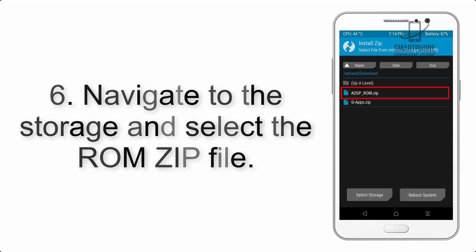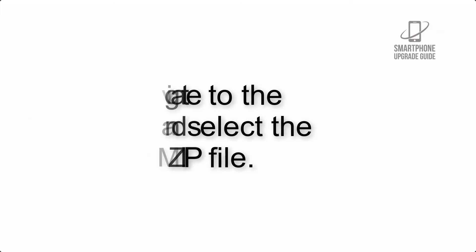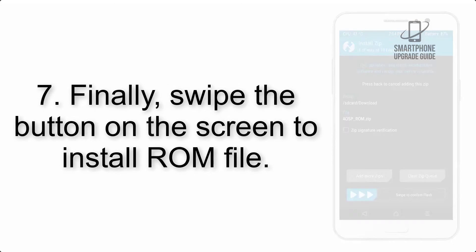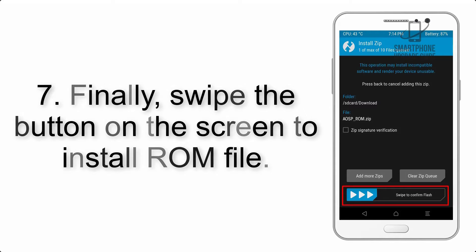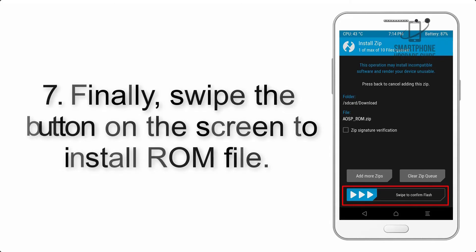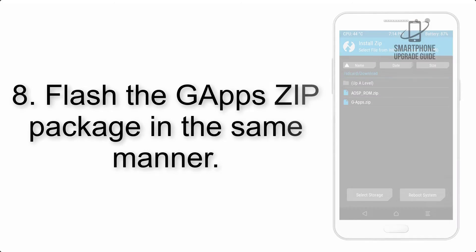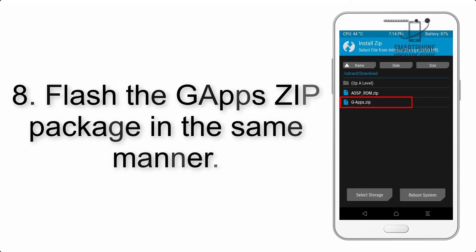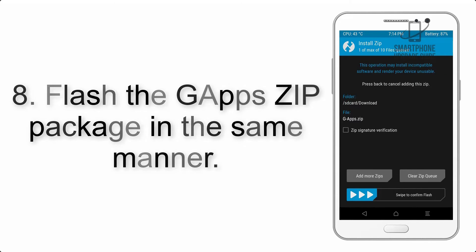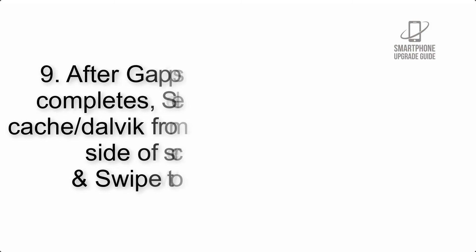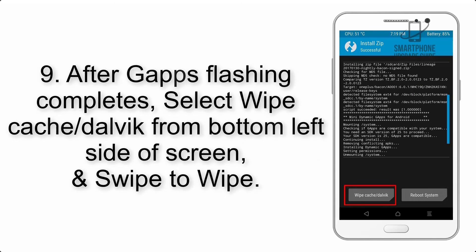Step 5: Go back to the recovery main screen and tap on the Install button. Step 6: Navigate to the storage and select the ROM zip file. Step 7: Finally, swipe the button on the screen to install the ROM file.